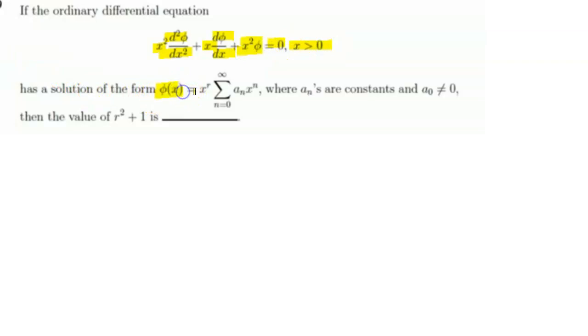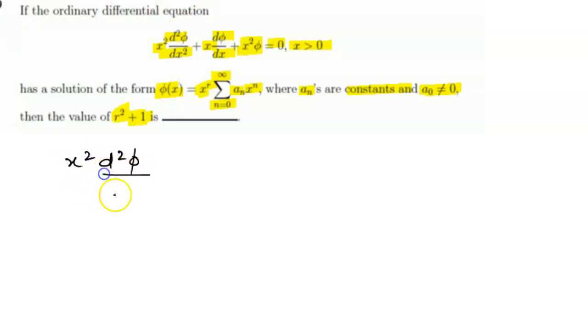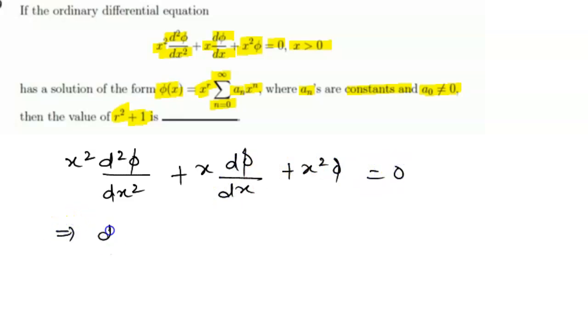The next question: if the ordinary differential equation x² d²φ/dx² + x dφ/dx + x²φ = 0 for x > 0 has a solution of the form φ(x) = x^r Σ(n=0 to ∞) aₙxⁿ, where aₙ are constants and a₀ ≠ 0, then find the value of r² + 1. We rewrite the equation as d²φ/dx² + (1/x) dφ/dx + φ = 0.